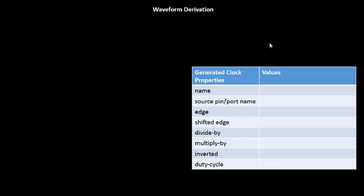Hello everyone. Let's look into an example where we have been given generated clock properties and we have to derive a waveform out of it. This is a regular practice that is done in industry. We have constraints — the generated clock definition and its properties are given in those constraints. Usually it becomes a task to create a waveform out of the properties of the generated clock. Let's try to do that.